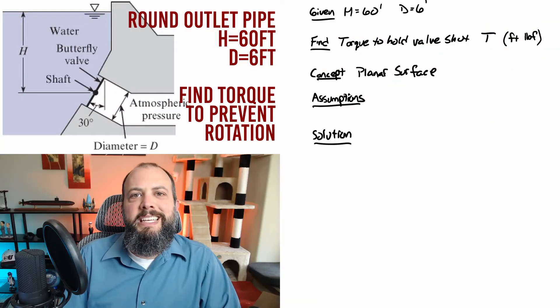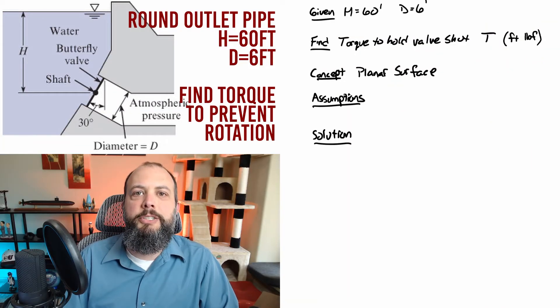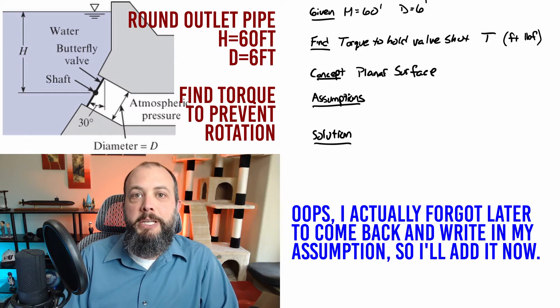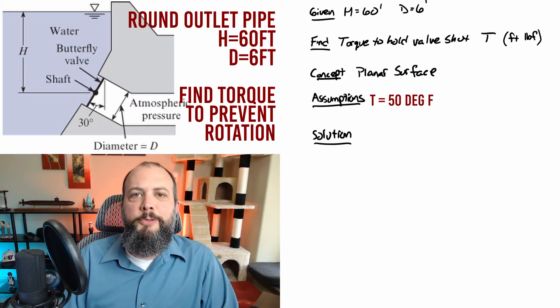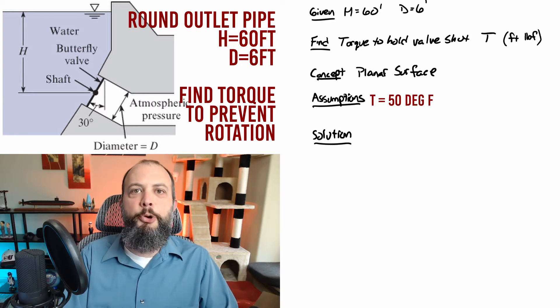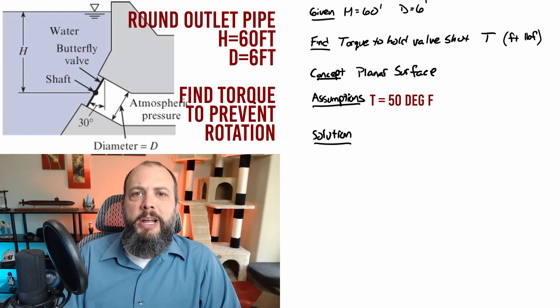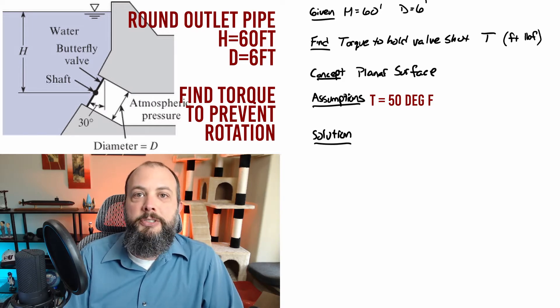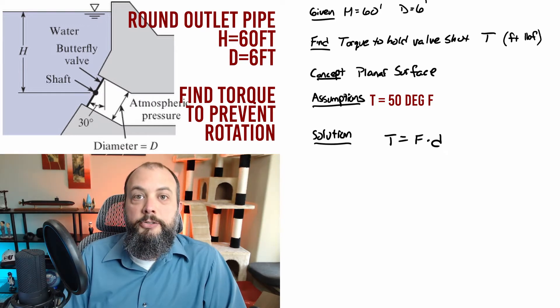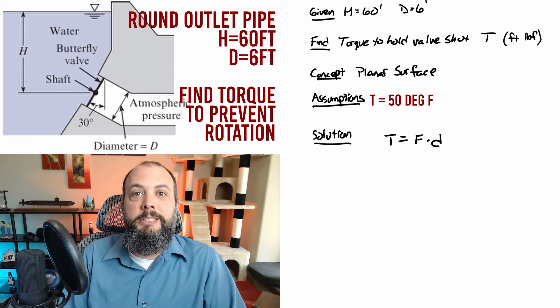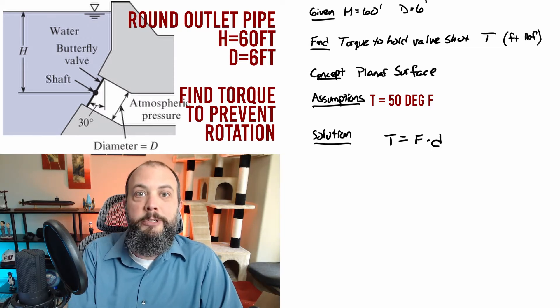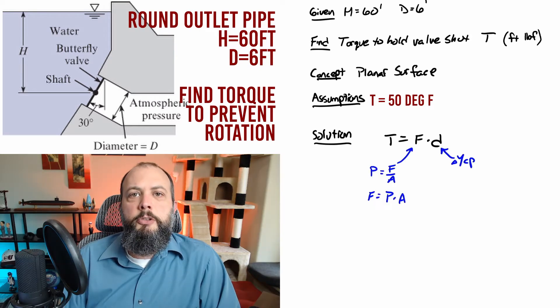Next step into the equations. I start off this problem with the give and find concept assumptions solution format that I like to use for fluid mechanics. I've left assumptions blank for now. I'm going to come back and fill those in each time I make an assumption. For this problem, I'm going to try and be more efficient by working backwards and start with the final answer and work back. The final answer torque is going to be force times distance, the force of pressure acting on the valve times the distance of where that force acts with relationship to the center of the valve.